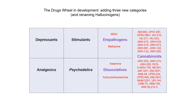One of the central goals was for the model to include all known drugs, and so three new groups were created: entactogens — drugs that mainly affect levels of serotonin — cannabinoids to include the large amount of spice-type drugs or synthetic cannabinoid receptor agonists, and dissociatives such as methoxetamine or MXE. The hallucinogen category was also renamed psychedelics to reflect more modern usage of the term.